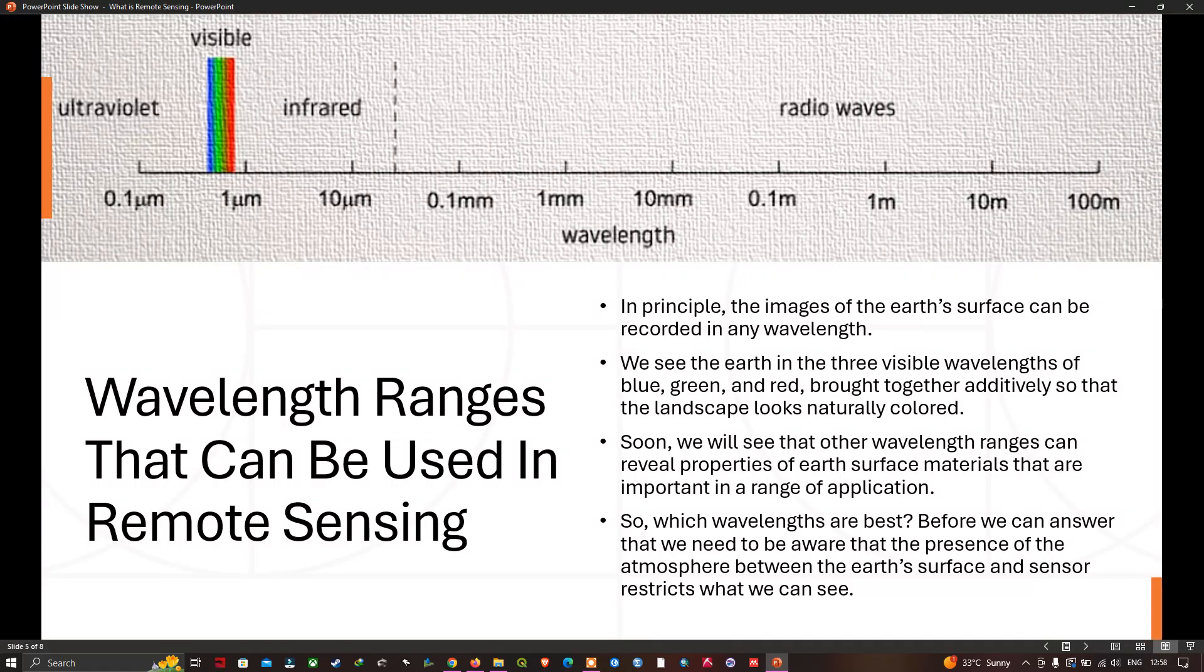When thinking about the design of the imaging instrument, the first consideration has to be what wavelength the system could be capable of recording. We could use any conceivable wavelength to image the earth's surface. We see the earth in three visible wavelengths: blue, green and red, the three primary colors which correspond to the color receptors in our eyes. They are combined additively to produce a range of colors and brightness to give us the natural set of landscape colors that we observe.